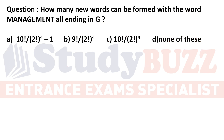Permutation and combinations question: How many new words can be formed with the word MANAGEMENT, all ending in G? MANAGEMENT has 10 letters. The condition is that all words must end in G, so G is fixed at the last position, leaving 9 remaining places.